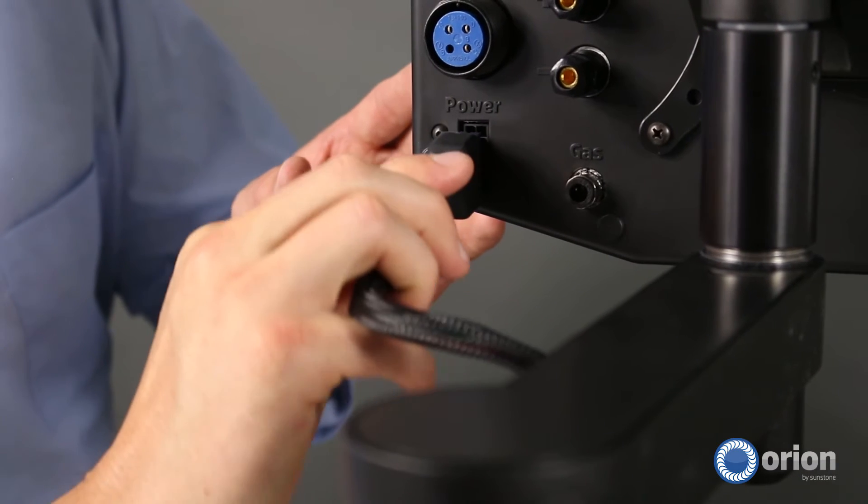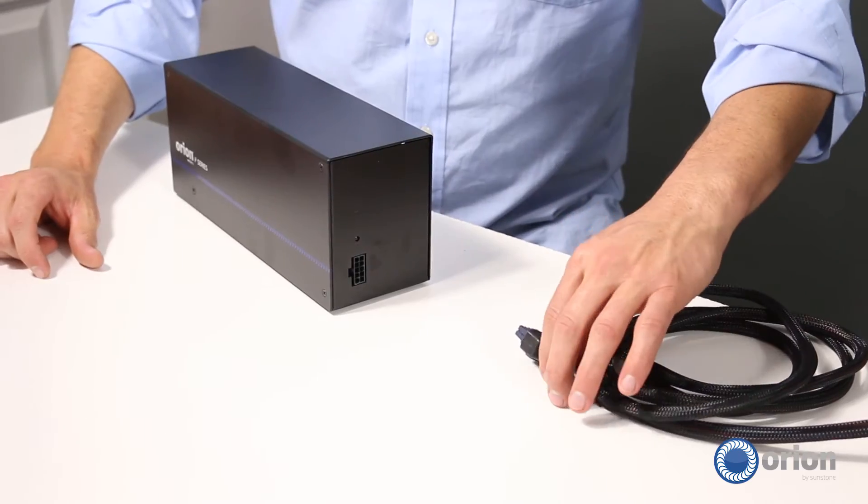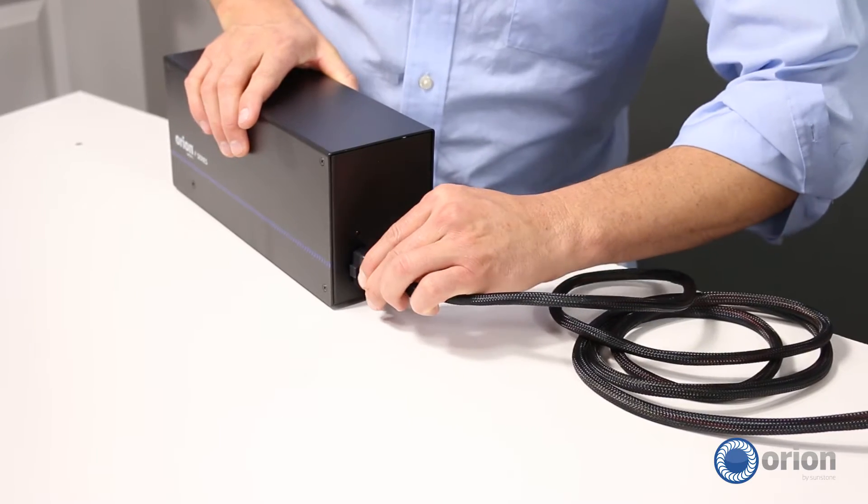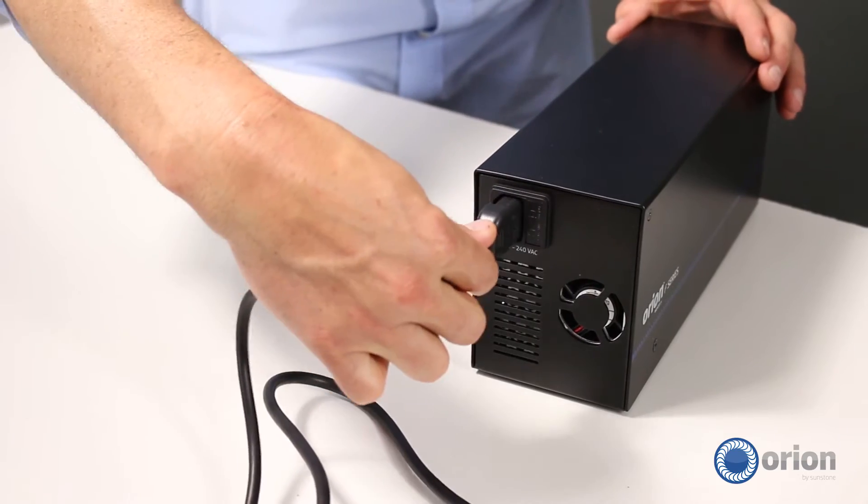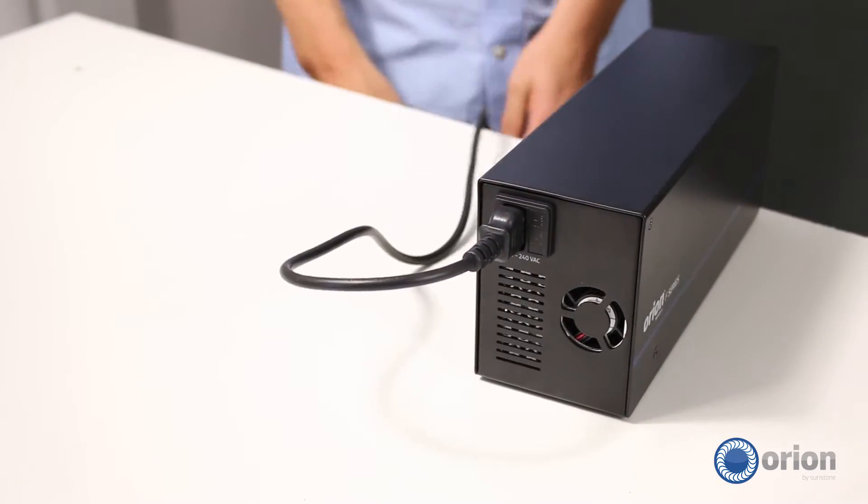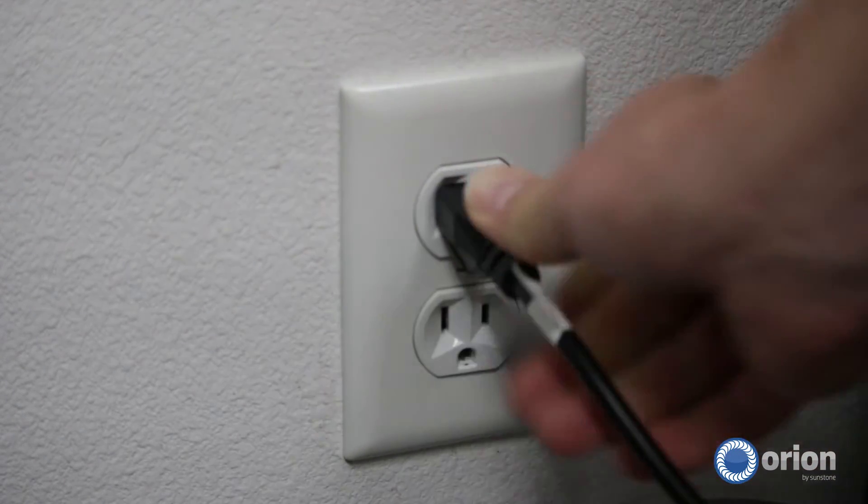Plug the power cable into the back of the welder and into the back of the power supply box. Now plug the AC power cord into the power supply box. Last, plug the end of the AC power cord into any standard 110 to 220 VAC outlet.